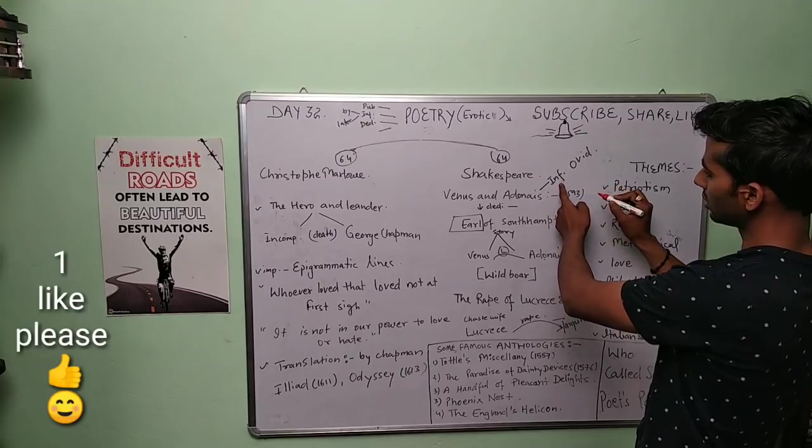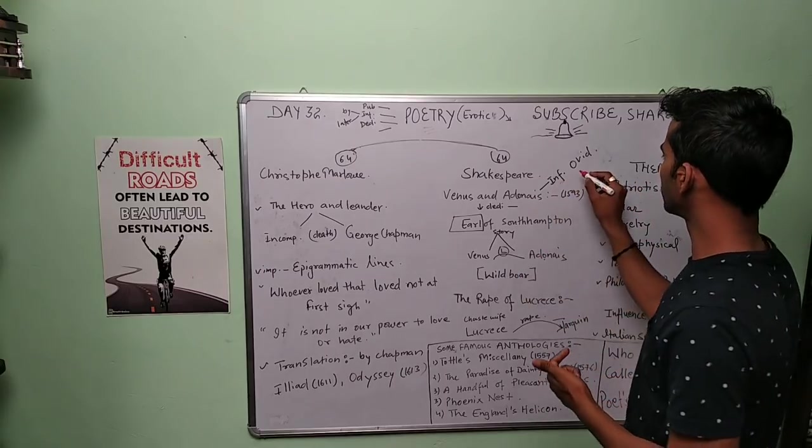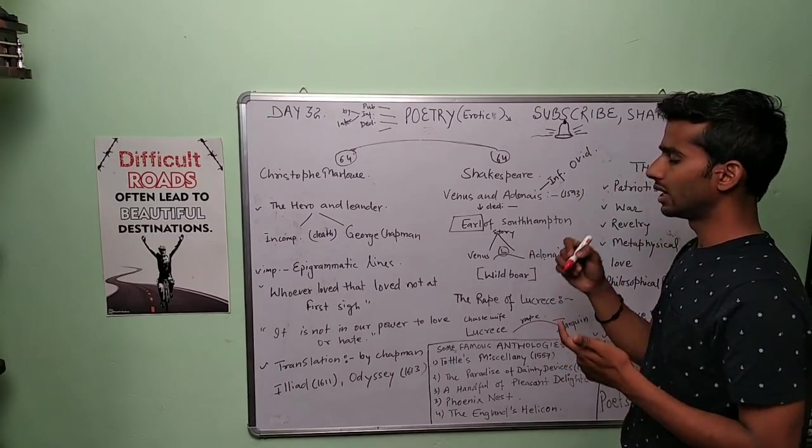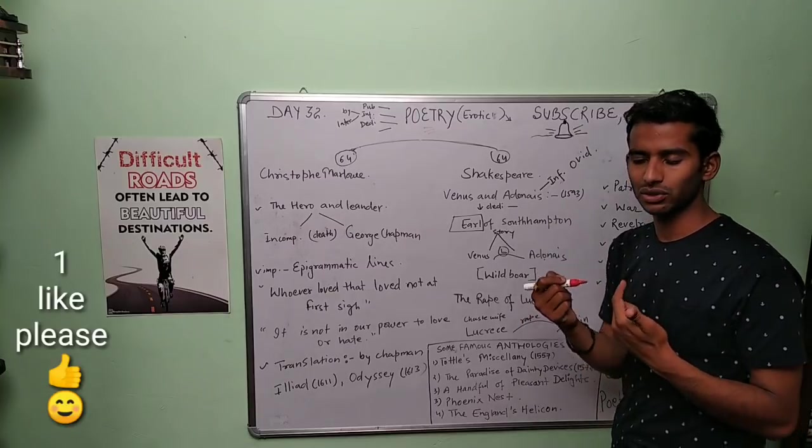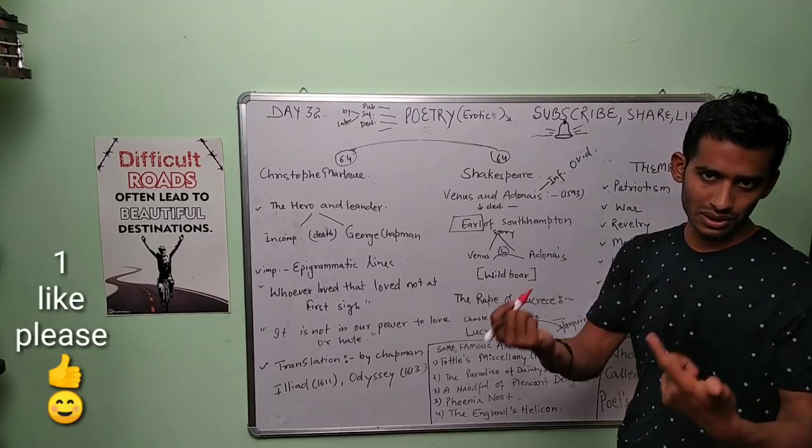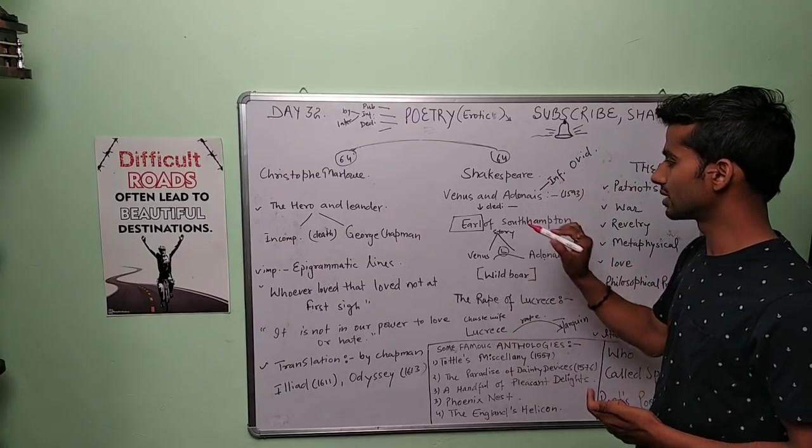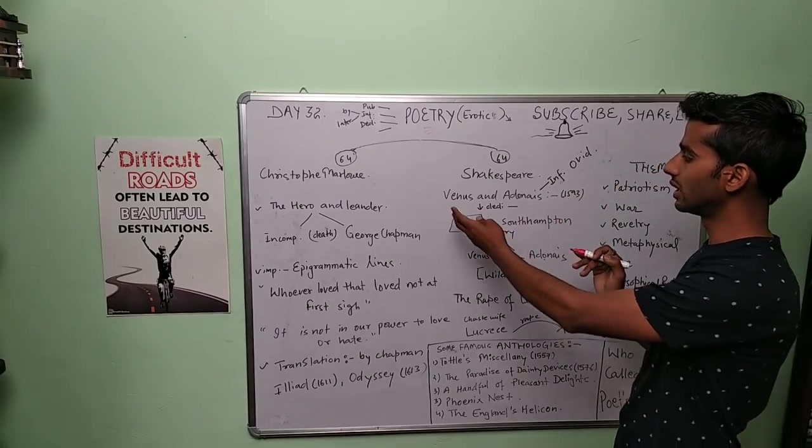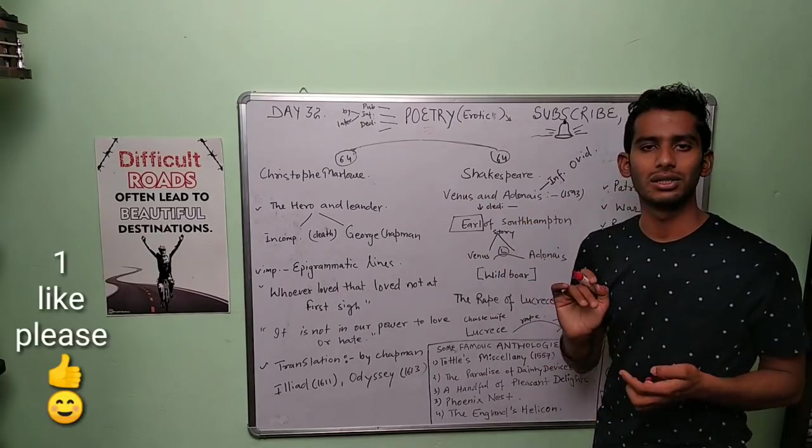Shakespeare was motivated by the work of Ovid and the Greek mythologies and Greek stories. So he wrote this out of that motivation—he wrote and composed Venus and Adonis.